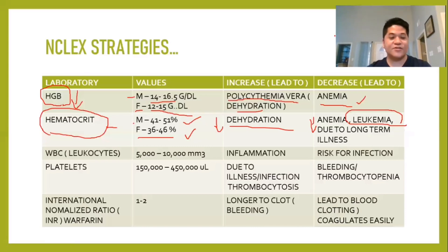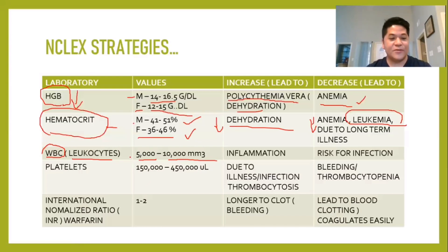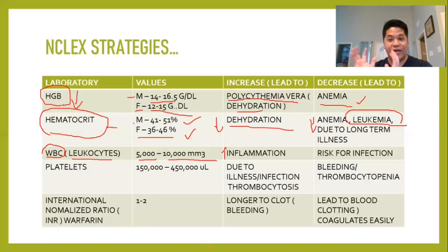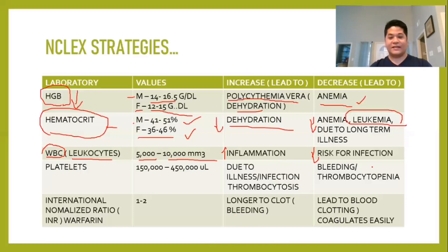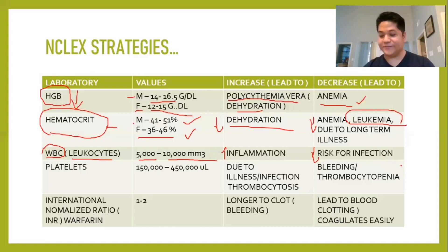Moving on to WBC, or white blood cells, also called leukocytes. The normal value is 5,000 to 10,000 cubic millimeters. When WBC increases, it indicates an inflammatory reaction — the body keeps sending WBC to a site of injury. If WBC decreases, it leads to risk for infection because there is decreased production of white blood cells. The term for increased WBC is leukocytosis, and for decreased WBC it is leukopenia.